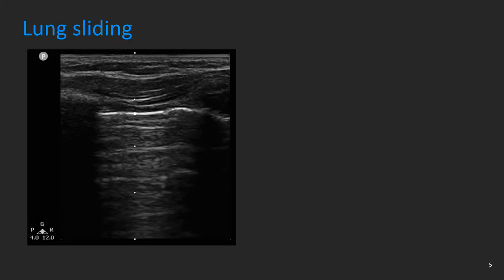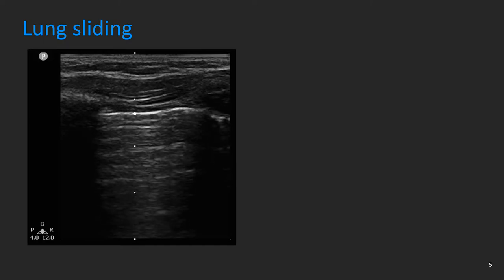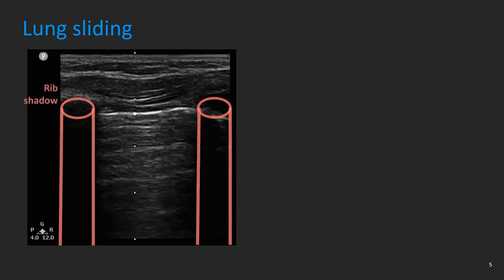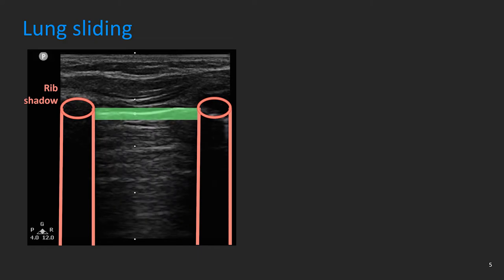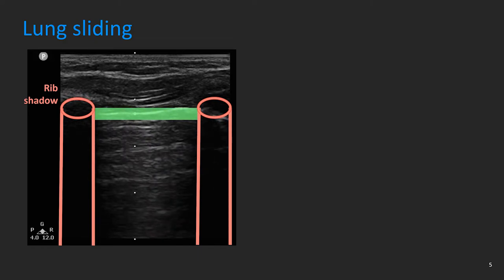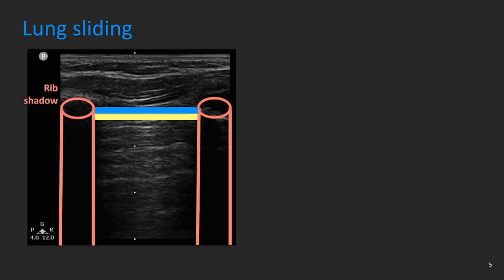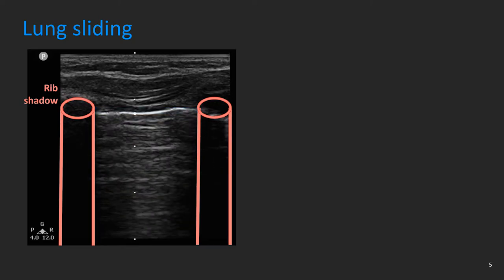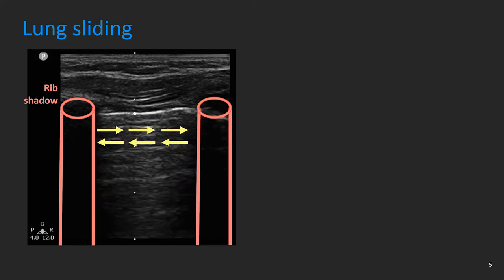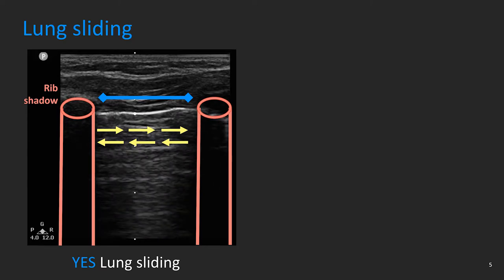Here we have a 2D image of the pleural line with a linear high-frequency probe. On each side we have the rib shadows and on the center we have the pleural line as a bright horizontal structure. This pleural line is made up of parietal pleura, seen in blue, and visceral pleura, seen in yellow. As you breathe, you can see how the visceral pleura slides back and forth against the static parietal pleura. This is what we call lung or pleural sliding.